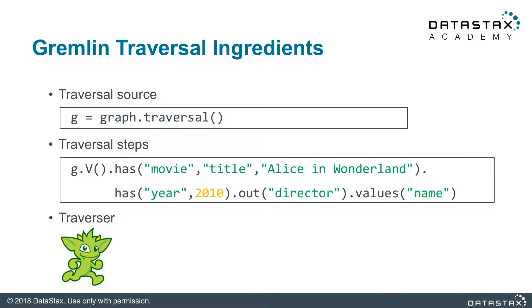The main ingredients that we see in a Gremlin traversal are traversal source, traversal steps, and traversers. In this example, traversal source is created for a property graph object using the standard OLTP traversal engine. In DataStax Enterprise Graph, both OLTP and OLAP traversal sources for each graph are already predefined and available to you. However, you may define a new traversal source for a subgraph that you may extract dynamically — the first line of code shows how to do so.